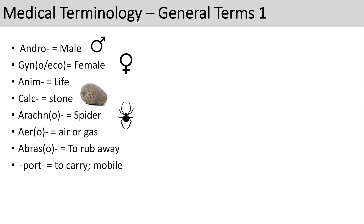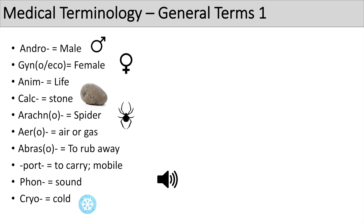'Port' means to carry or mobile — think of transport, export, or portable; they all mean to carry. The next prefix is 'phone', which relates to sound — think of the word phonetic. The next prefix is 'cryo', which means cold — think of cryogenics or cryotherapy, which all relate to cold.